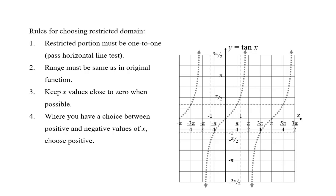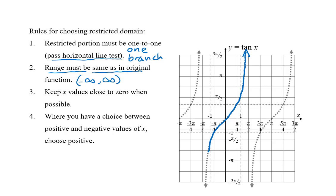Next, we find the restricted domain for the inverse tangent. The tangent curve is not continuous — it exists in several separate pieces called branches. To follow the first rule, so that the restricted portion is one-to-one, we use only one branch of the tangent function. The second rule says the range must be the same as the original function. The tangent curve goes all the way down to a y approaching negative infinity and up to a y approaching positive infinity, so the branch we select must do the same. The third rule says keep x values close to zero — we select the branch that passes through zero.